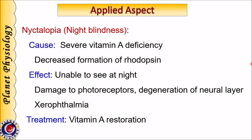In prolonged vitamin A deficiency, cone functions are also altered and the person finds it difficult to see during daytime as well. It also causes damage to photoreceptors and other neural layers in the retina. Lacrimal secretion is reduced, leading to dry eye, which is called xerophthalmia. Since nyctalopia is caused by vitamin A deficiency, it is treated by restoring vitamin A levels. If replacement is done at an earlier stage, the condition can be reversed completely.